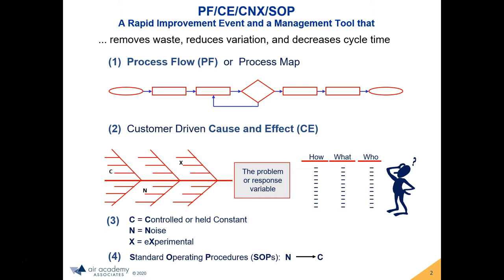The first of these four tools is a process flow diagram. A process flow diagram — some people call it a process map — is a graphical tool that describes the sequence, the flow, and the order of all of the major steps in a process, including the decision points. It improves understanding of the process as a whole, helps determine bottlenecks, and facilitates the identification of other problem areas.